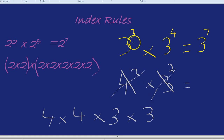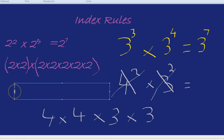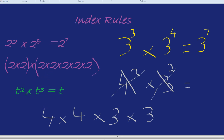When the base number is the same, you do have the quick shortcut. Let's do one with a letter: t squared times by t cubed. What is that? That is simply t to the power of 5 — you just add the little numbers.